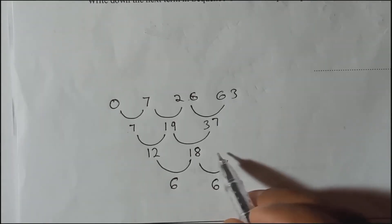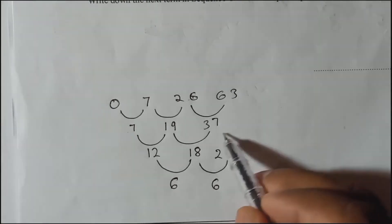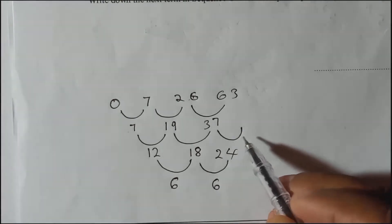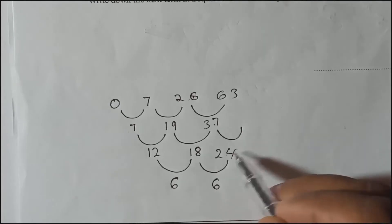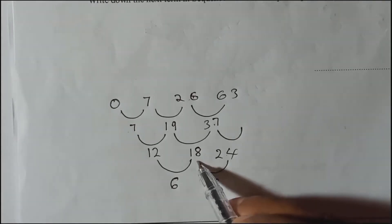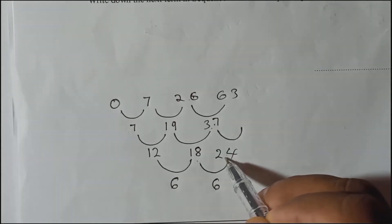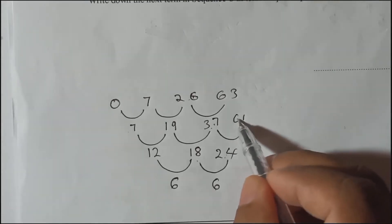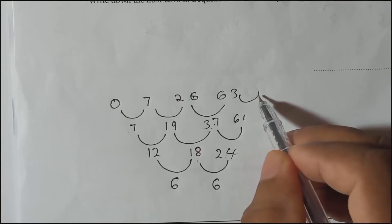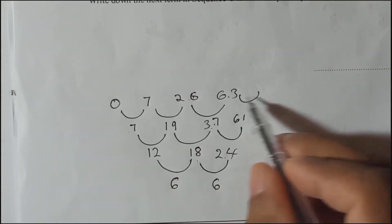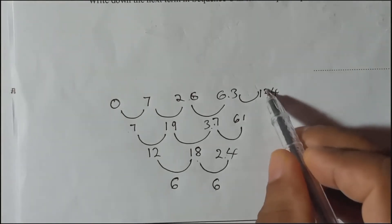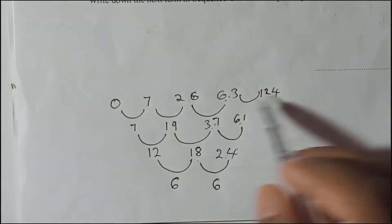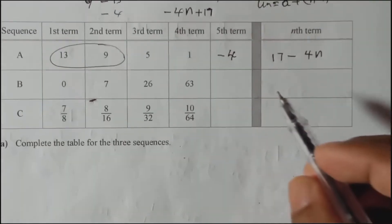To find the fifth term, we extend the pattern. The third difference stays at 6, so the next second difference is 18 + 6 = 24. The next first difference is 37 + 24 = 61. Then the fifth term is 63 + 61 = 124. So the fifth term of this cubic sequence is 124.